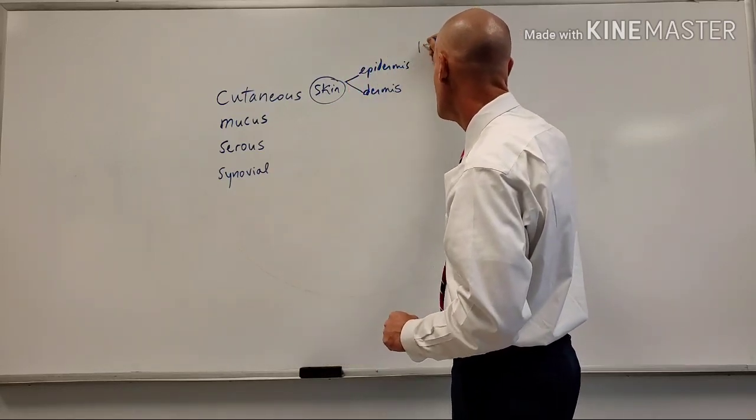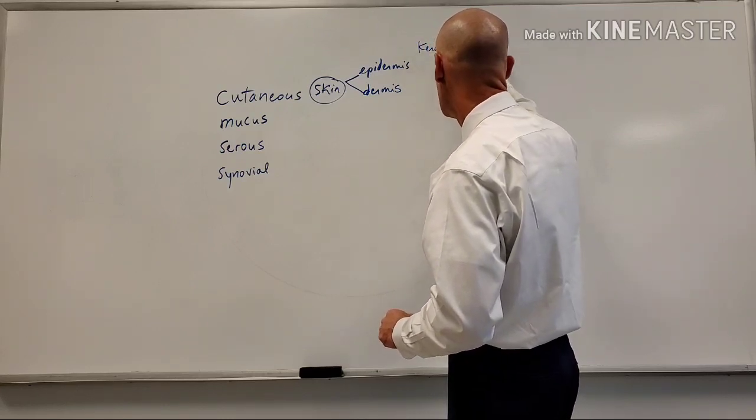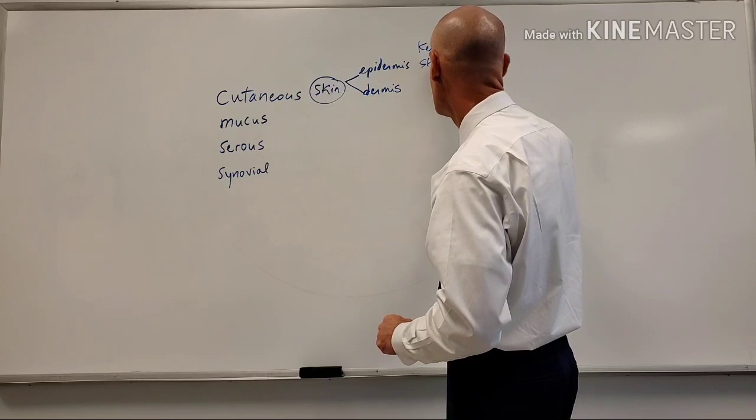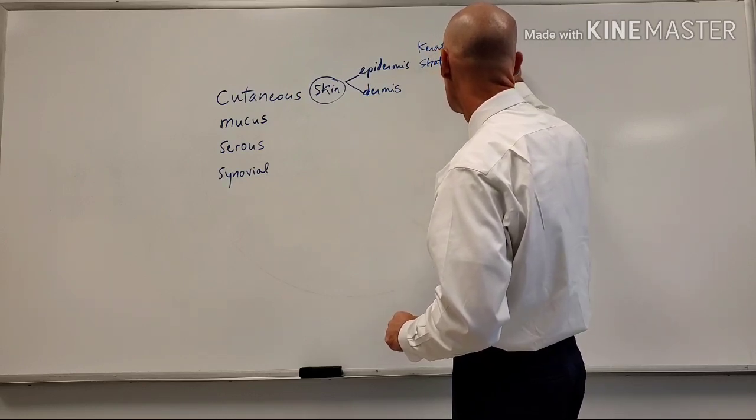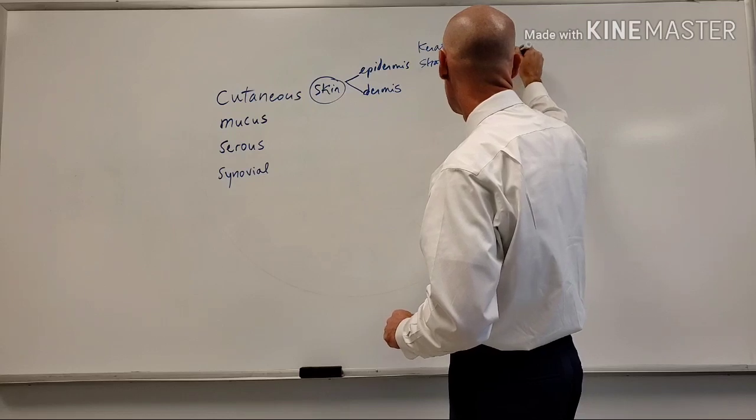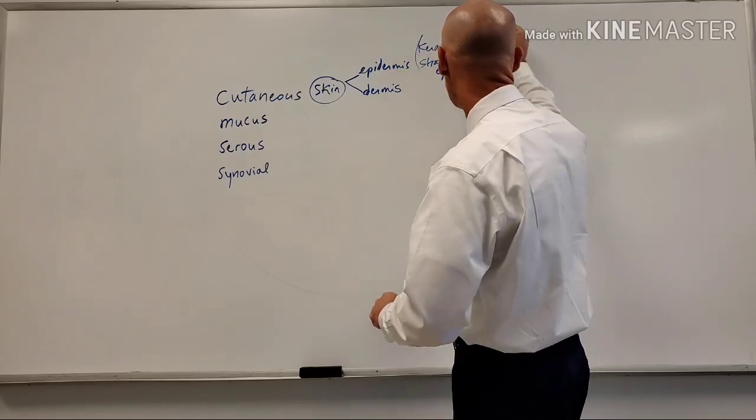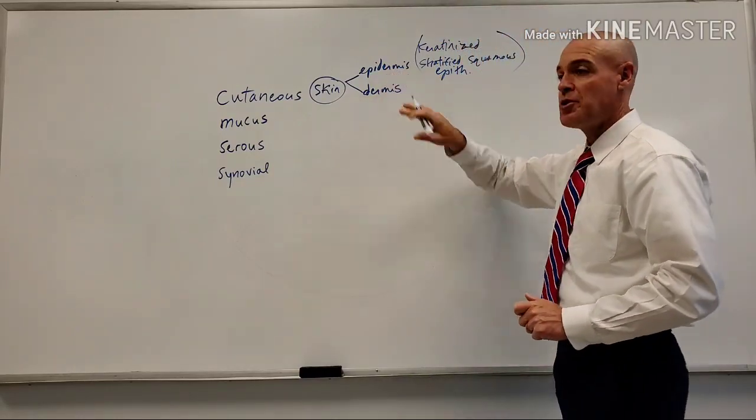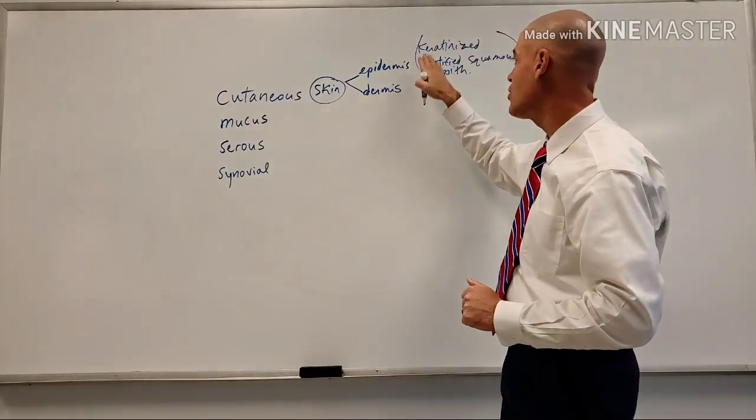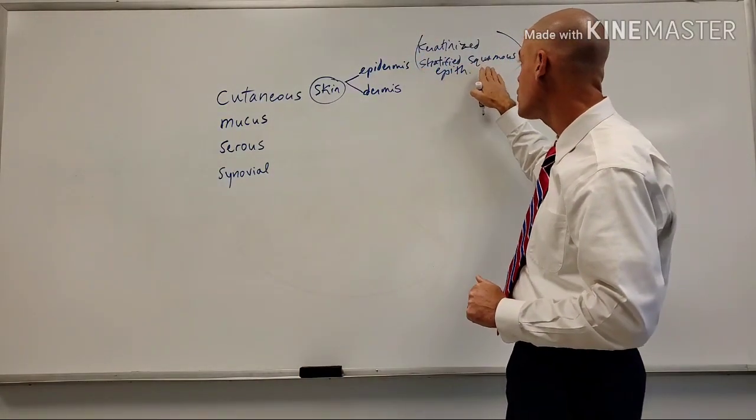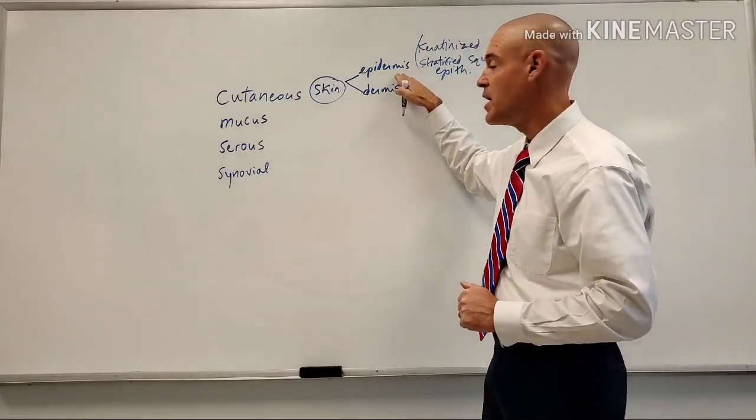Skin is made up of epidermis and dermis. Epidermis, many of you already know, is keratinized, stratified, squamous epithelium. So epidermis is obviously the tissue type is very lengthy, keratinized, stratified, squamous epithelium. So that would be a tissue, and that would be the outer layer of skin.